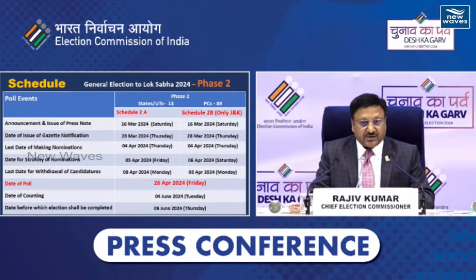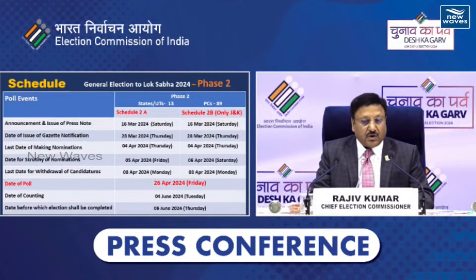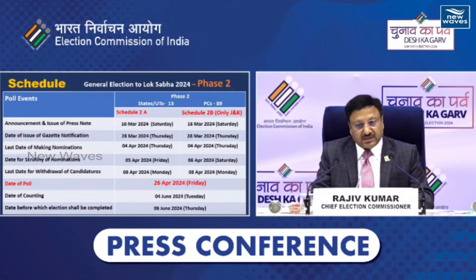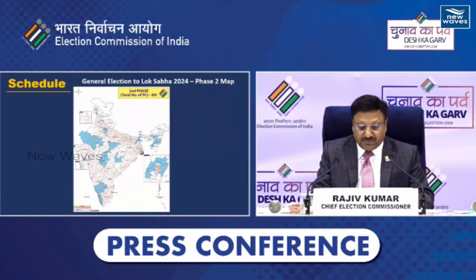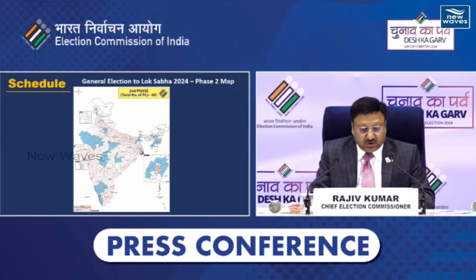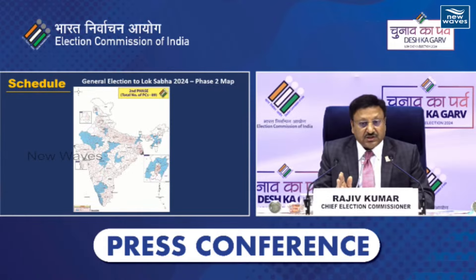Second phase: notification will start on 28th of March and date of poll will be 26th of April. In case of J&K, because of some holiday, the date of nomination scrutiny would be different, but date of Gazette notification and date of poll would be common. Phase two mein aur raajye jud jaayenge — North East mein kaafi jagah chunaav complete karte hue, Tamil Nadu mein complete karte hue, second phase mein Rajasthan ko bhi complete karenge.